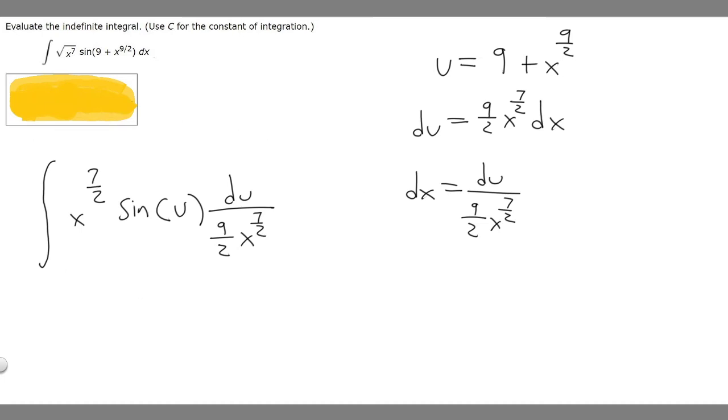So now we got it in this form. What we can realize is that x to the 7 over 2 can cancel with this x to the 7 over 2. Then we have 1 over 9 over 2, which is just 2 over 9. So we can move that out front. So our integral is going to then become 2 over 9 times the integral of sine of u du.